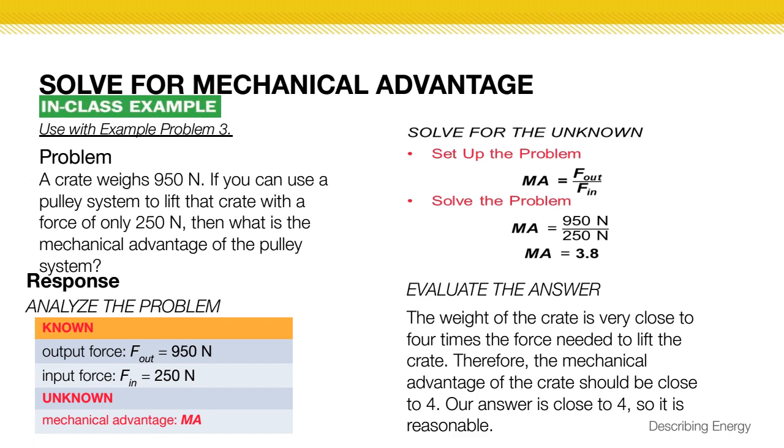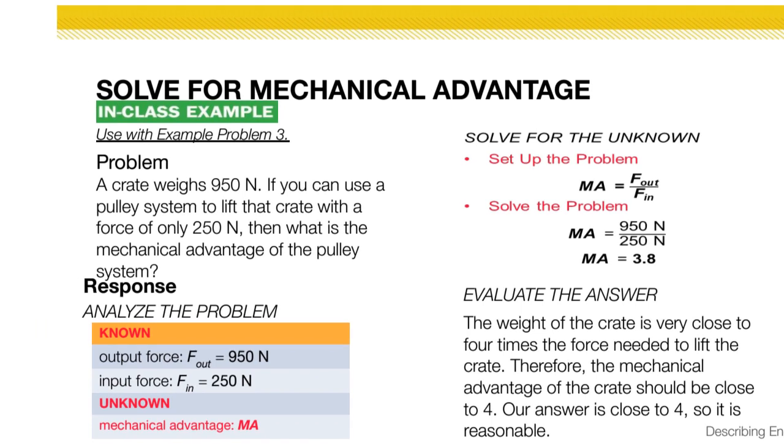You're going to take your output force, that's the total force needed to move this, that's the 950. And you're going to divide that by the input force, what you have to do, the 250. That's going to give you 3.8, which is about 4, which means that the work you do is almost a quarter of the work that actually needs to be done. So I'd say that's a pretty useful machine.